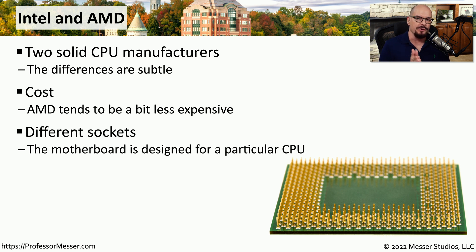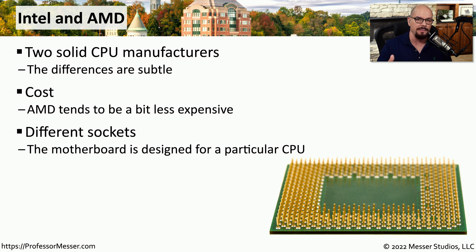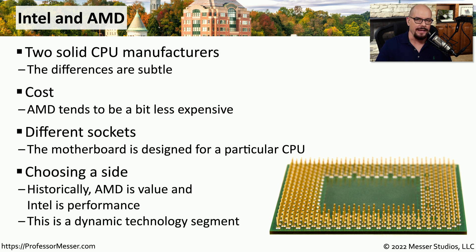Once you make the decision on whether you're going with an AMD-based motherboard or an Intel-based motherboard, you're effectively locked into that decision. You can't remove an AMD CPU and replace it with an Intel CPU. Not only are the CPUs very different in how they are designed and how they operate, but the sockets themselves are very different between manufacturers. Traditionally, we thought of AMD as being the more cost-effective CPU and Intel as having the more powerful CPU. But these criteria change quite a bit as time goes on, and you'll have to check the specifications for your motherboard and CPU to see if you're getting exactly what you want.